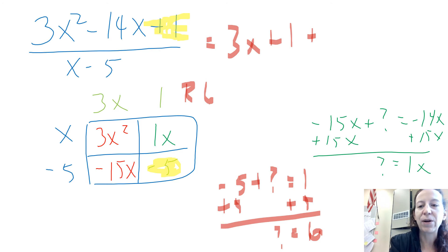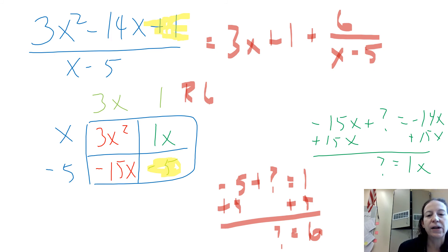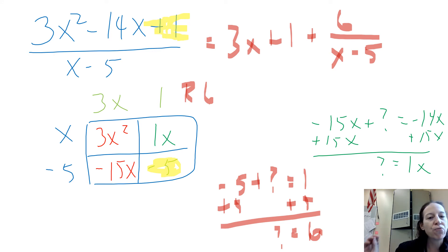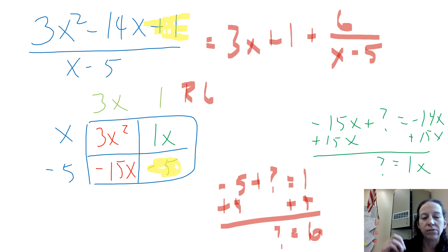Our answer starts with 3x plus 1 from the top of the box, but we also have a remainder. To find the remainder: we've got negative 5 but we want positive 1, so negative 5 plus what gives us 1 — add 5 and that something is 6. The remainder is 6, and we write it as 6 over x minus 5. So the full answer is 3x plus 1 plus 6 over (x minus 5). Stop the video and rewind if needed to follow that thought process through.